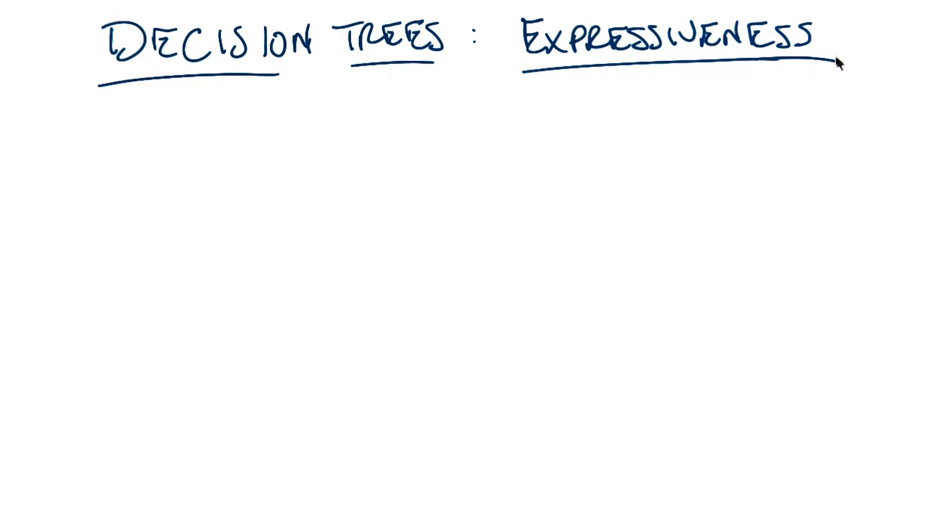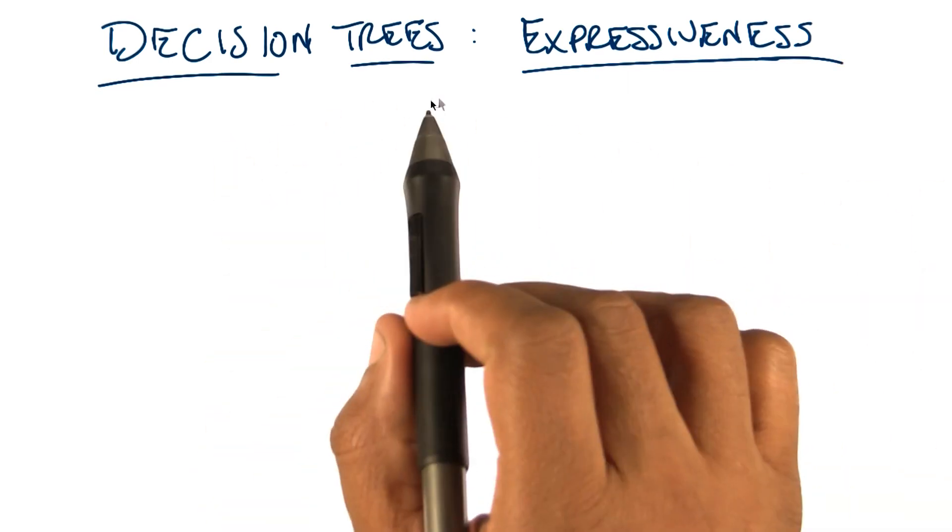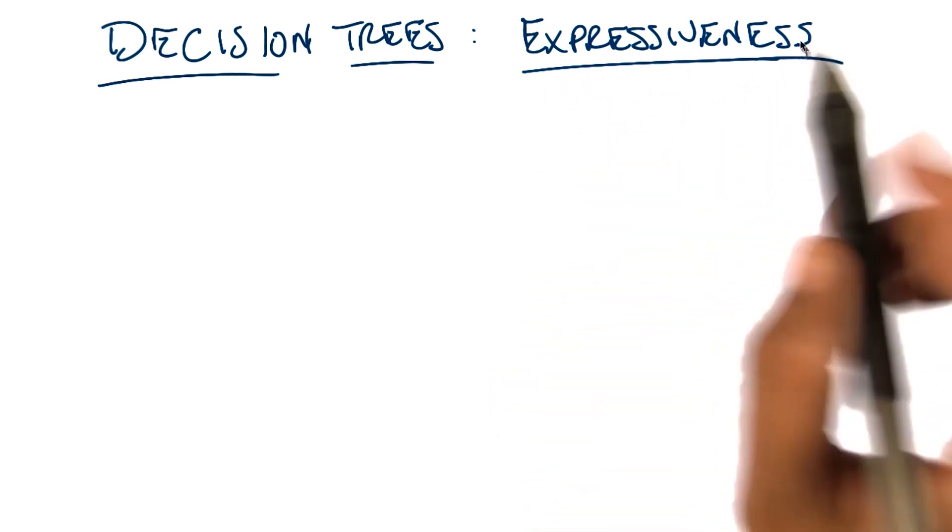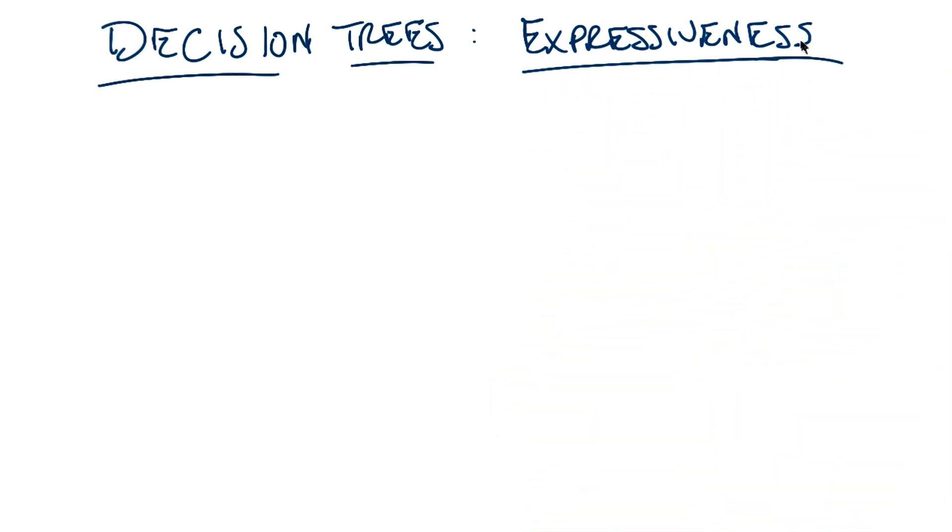Okay, so Michael, for the last 15 minutes or so we've been talking about decision trees sort of in the abstract, without saying too much about the kinds of functions they can actually represent. So for the next few minutes or so I want to talk a little bit about not just decision trees in the abstract, but exactly how expressive they can be. Is that okay? Yeah, I think that'd be really helpful. I think so too.